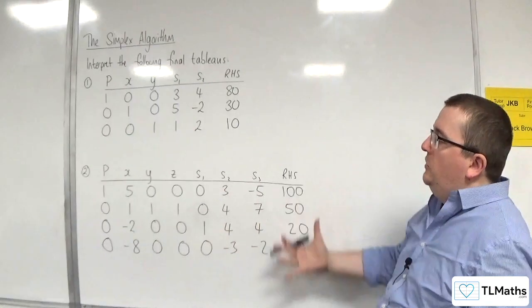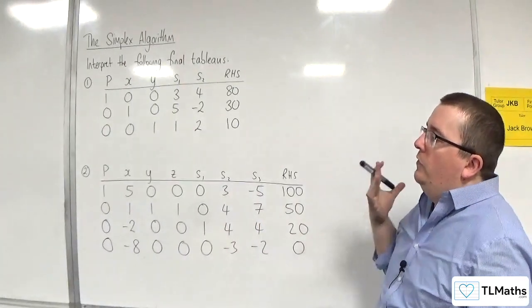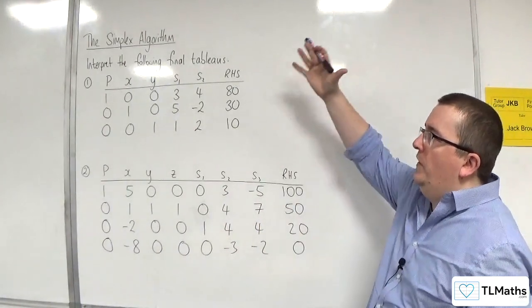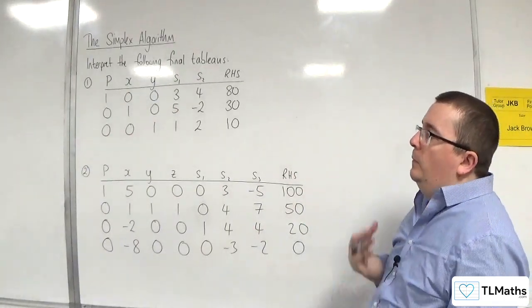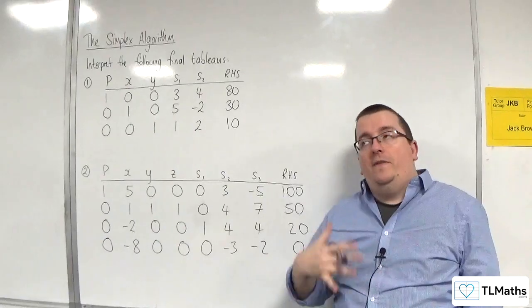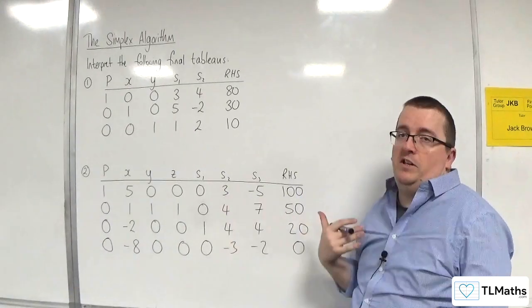In this video, we're going to take a look at these two tableau, and you've got to imagine that they represent the final tableau, having gone through the simplex algorithm. What we want to write down are the values of P and the rest of the variables.